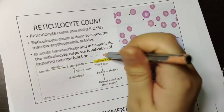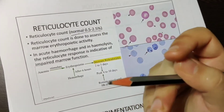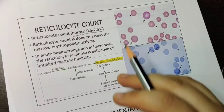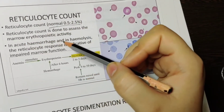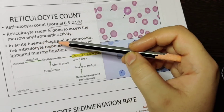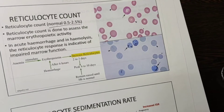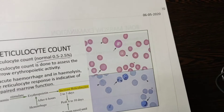Then, reticulocyte count. Normally in our body we see some amount of reticulocytes, but if these increase, that is known as reticulocytosis. Reticulocyte count helps to see the bone marrow's erythropoietic activity. In acute hemorrhage and hemolysis, reticulocyte count helps us know if the bone marrow is impaired or not. Reticulocytes have organelles, whereas mature blood cells do not. When you have anemia, it stimulates erythropoietin from the kidney.